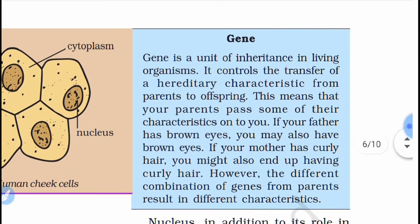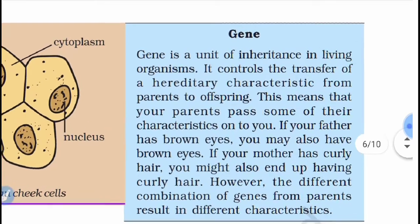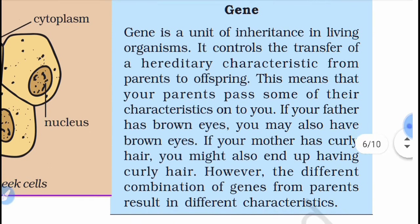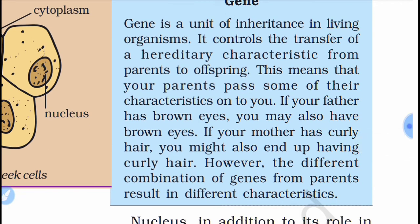For brief knowledge for upcoming classes: a gene is a unit of inheritance in living organisms. It controls the transfer of hereditary characteristics from parents to offspring. This means your parents pass some of their characteristics on to you — for example, if your father has brown eyes you may also have brown eyes, or if your mother has curly hair you might also have curly hair. Different combinations of genes from parents result in different characteristics.